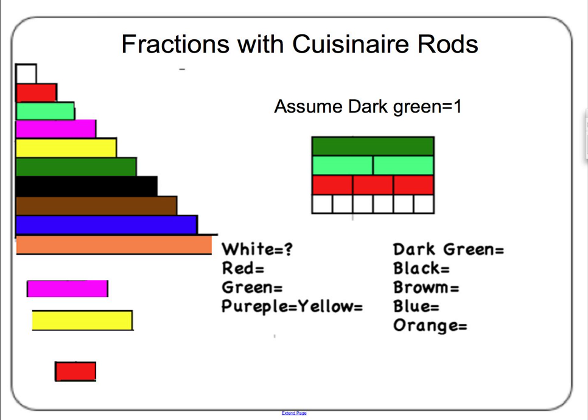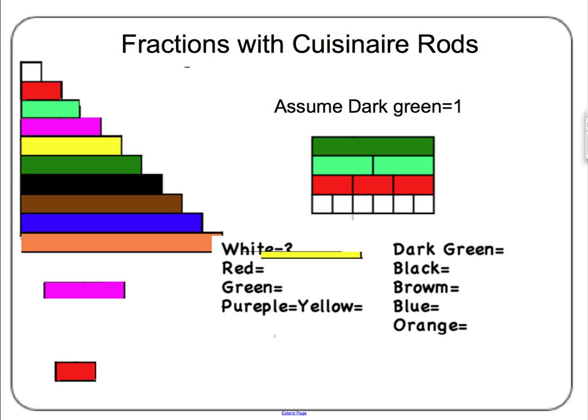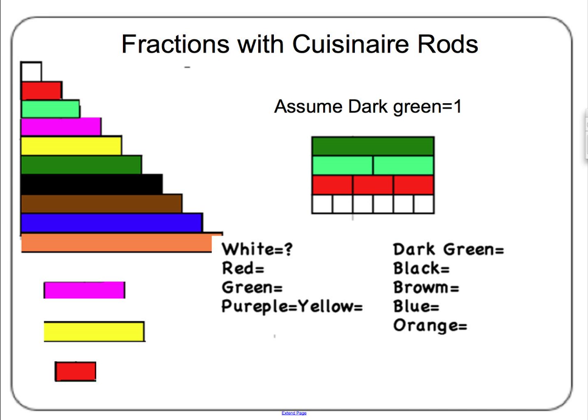You can also use Cuisenaire rods to teach about fractions. With Cuisenaire rods, all the rods are different colors and different lengths. You can choose any rod to represent one whole — for example, suppose the dark green is one whole. The rods that fit into the dark green are parts of that whole: the light green is a half, the reds are a third, and the whites are a sixth. The violet represents two-thirds, and the yellow represents five-sixths.